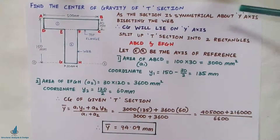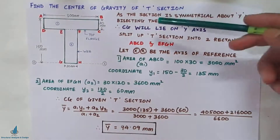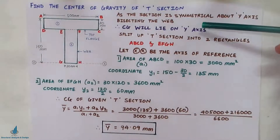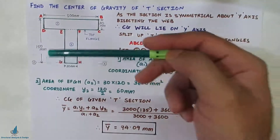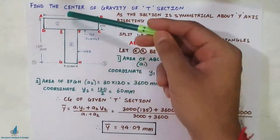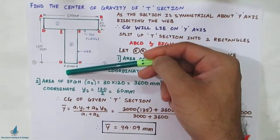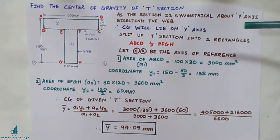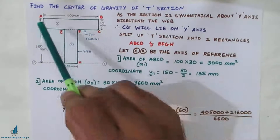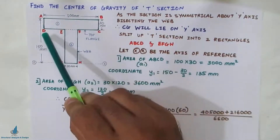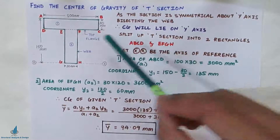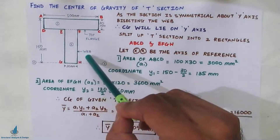Due to being symmetrical about the Y-axis, the center of gravity will lie on the Y-axis. So whatever center of gravity we calculate will be lying on this Y-axis. To solve this problem, we have to split the T-section into two rectangles. The first rectangle will be ABCD in the top flange, and the next rectangle EFGH will be the web.